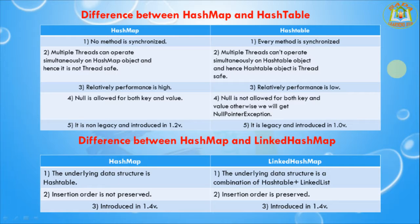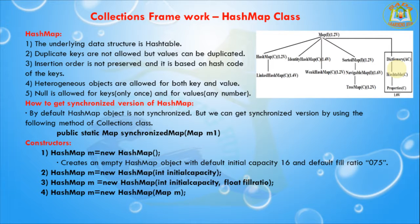There are four constructors available in HashMap. The first is the default constructor, which creates an empty HashMap with default initial capacity 16 and load factor 0.75. The second takes an initial capacity as an integer argument. The third takes two arguments: initial capacity (int) and load factor (float). The fourth takes a Map reference object.